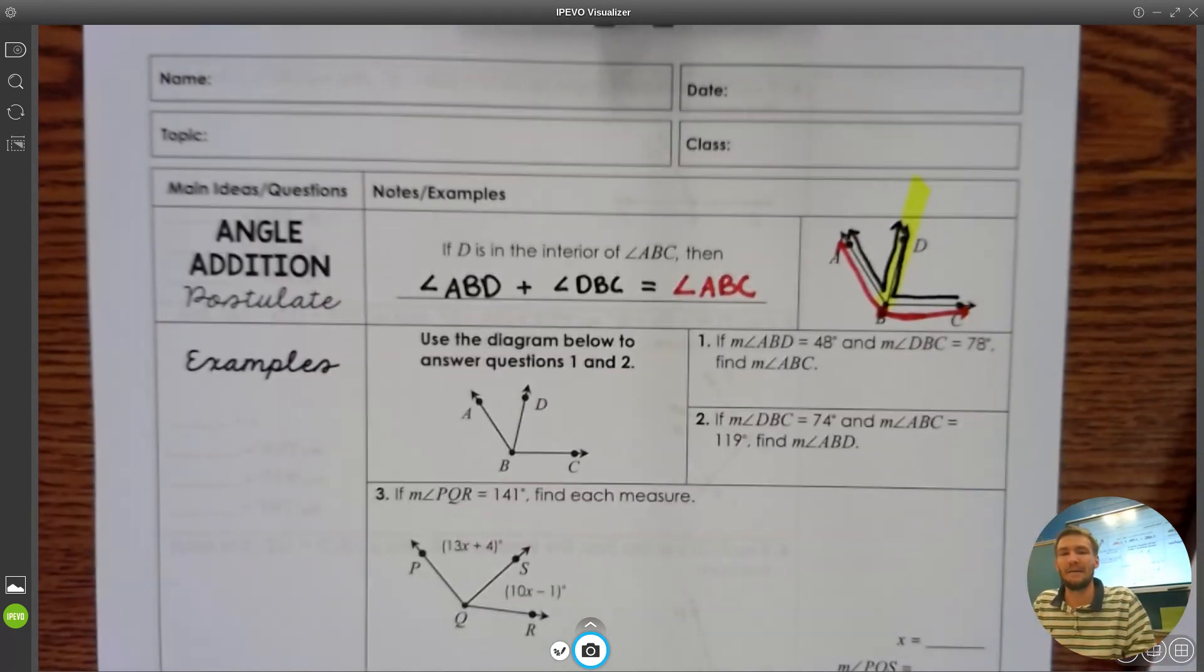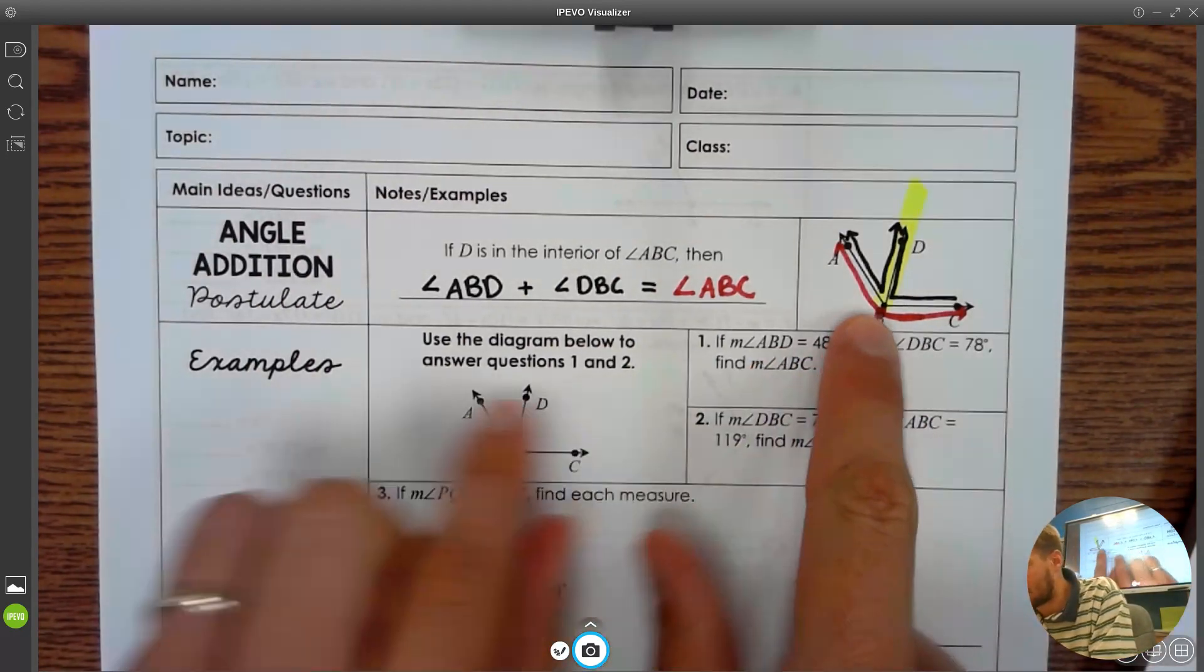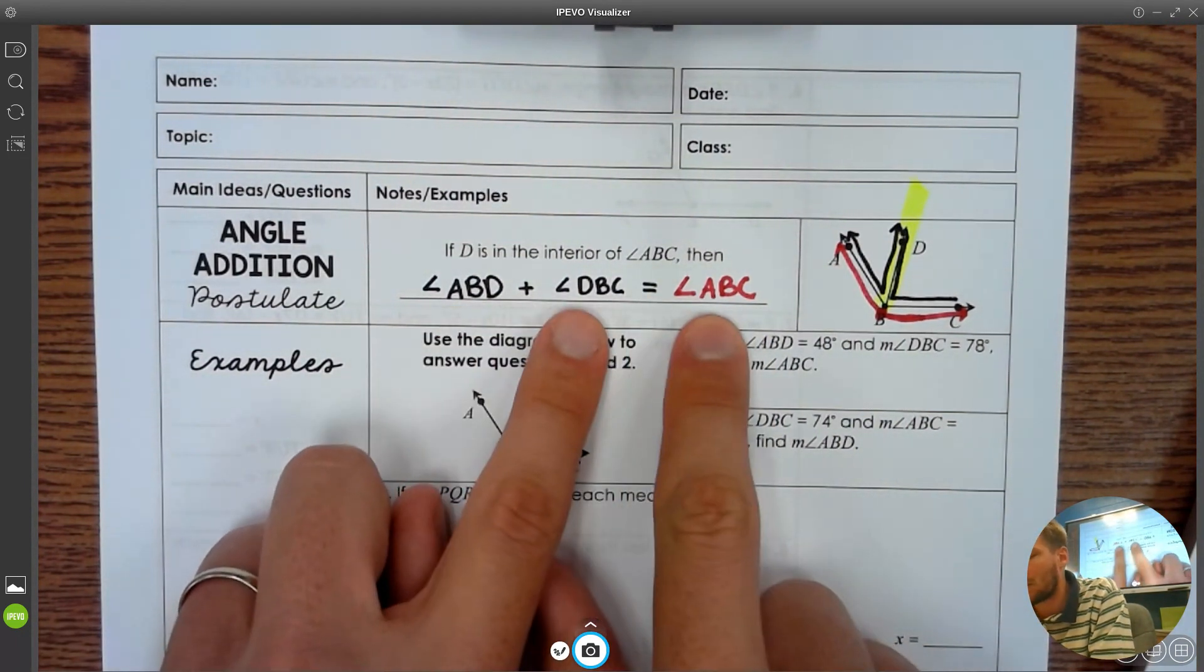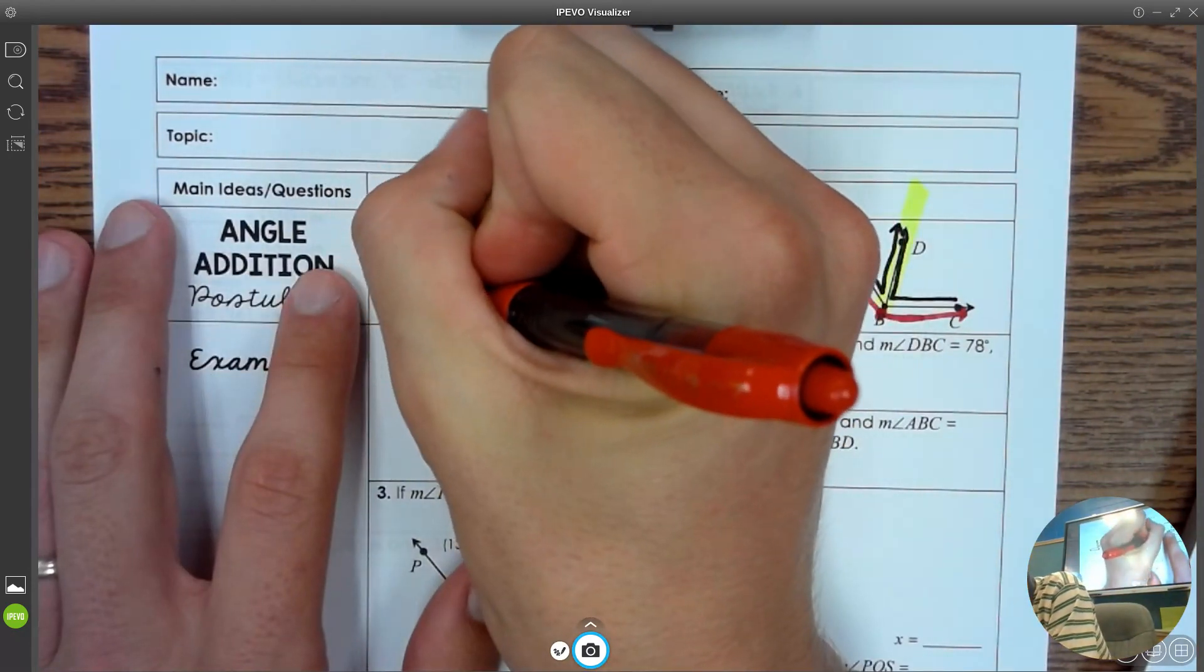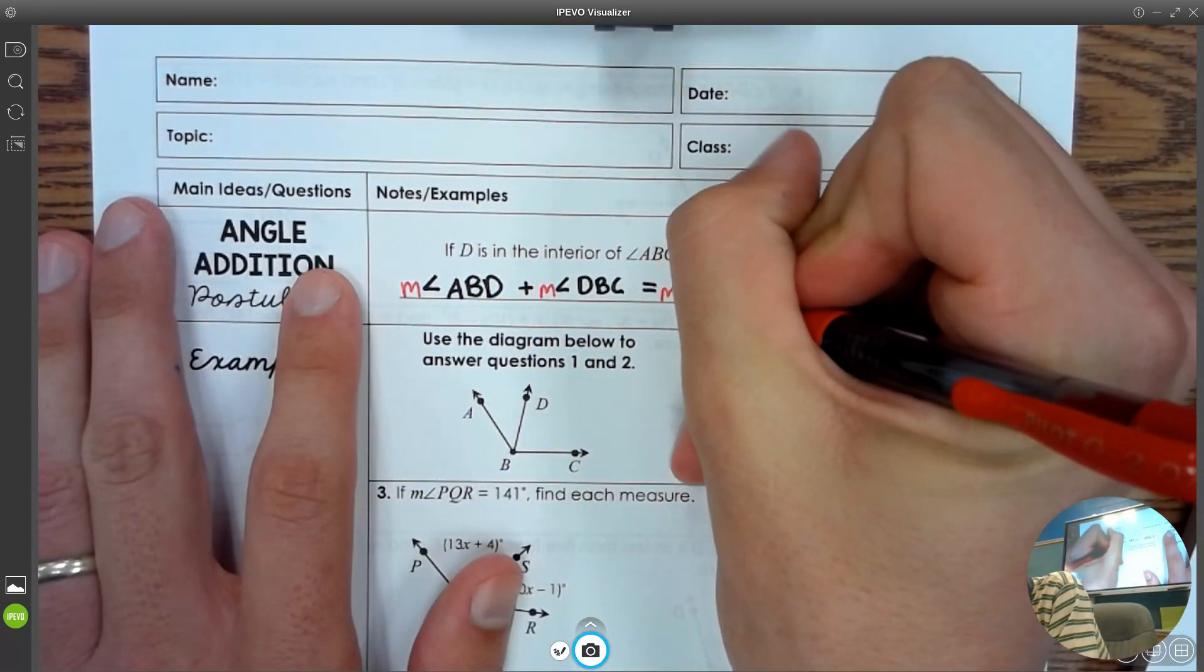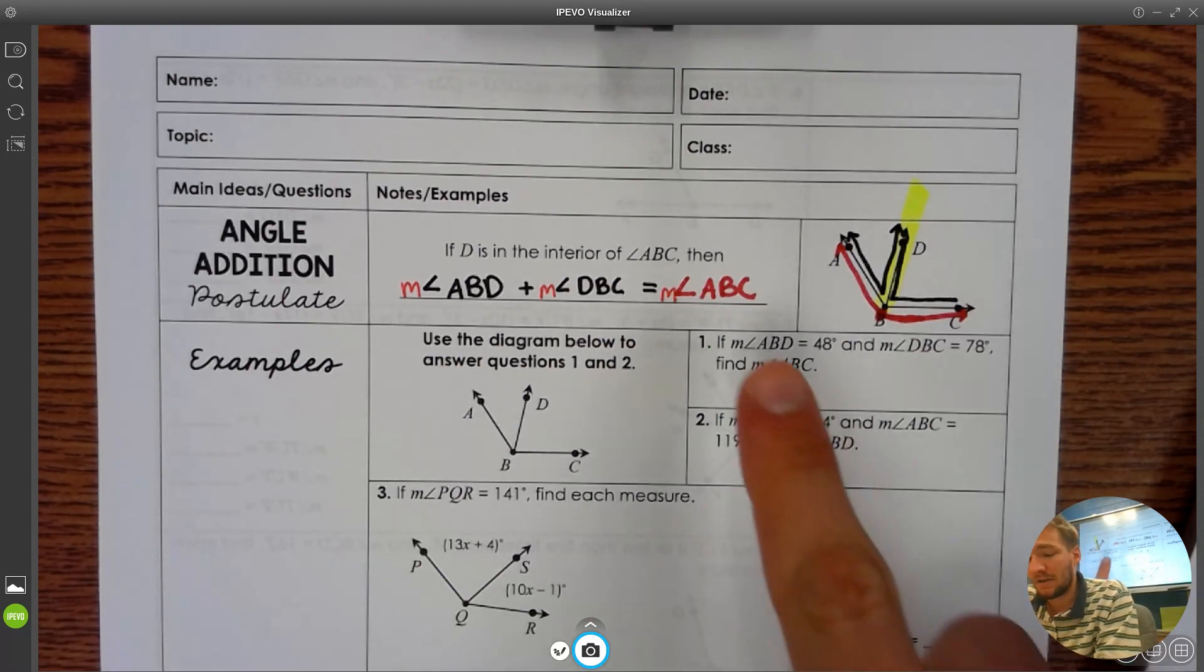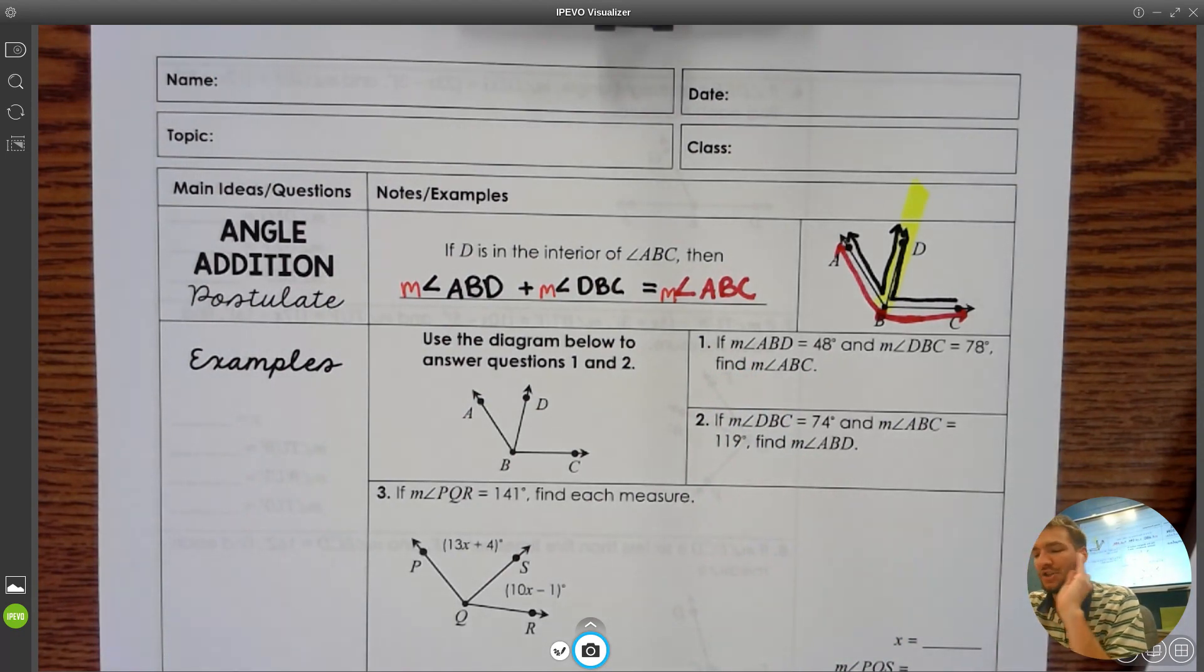Now, always a good idea to double check and make sure that your vertex is in the middle. My vertex is B, so I got to make sure that B is in the middle of all three of these. This literally just says the small plus the small equals the big. Remember, if you see an M in front of these, the M just means the measurement. We're going to see that a lot, like in question one.